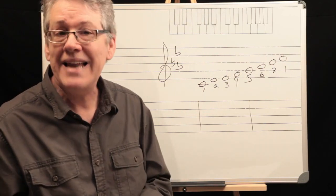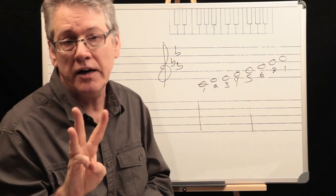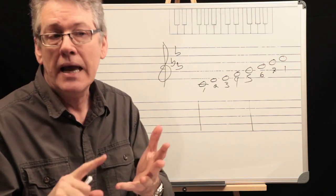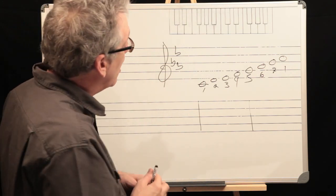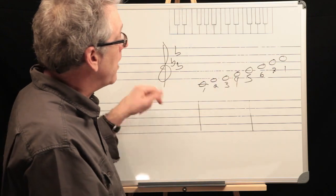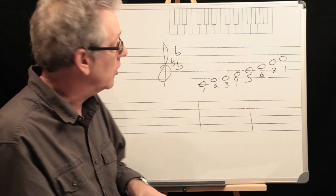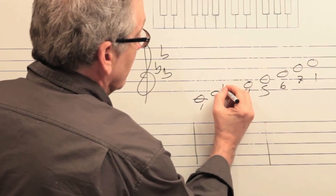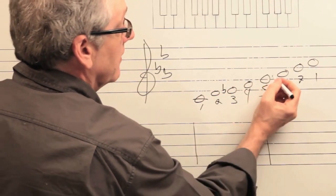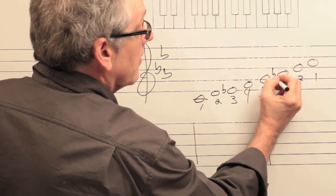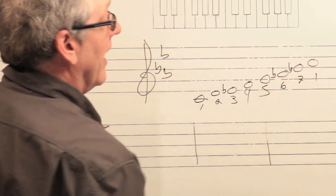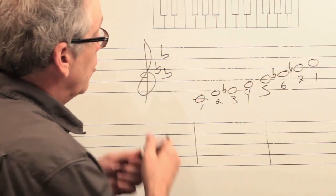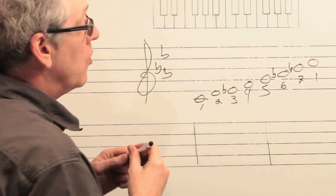Now in minor — in C minor — there are three types of minor, but we're only going to concern ourselves with natural minor and harmonic minor. Natural minor has three flats: E-flat, A-flat, and B-flat.